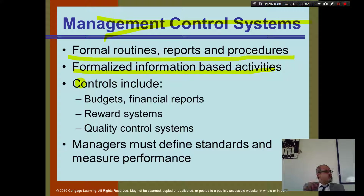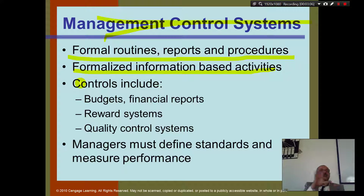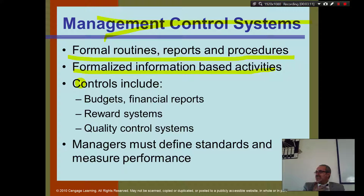Sometimes a computer checks. If you've been online on a registration process website, you fill in your information and click next, and it tells you: your phone number is not correct, your email is missing. That's an online control system — it checks by itself.